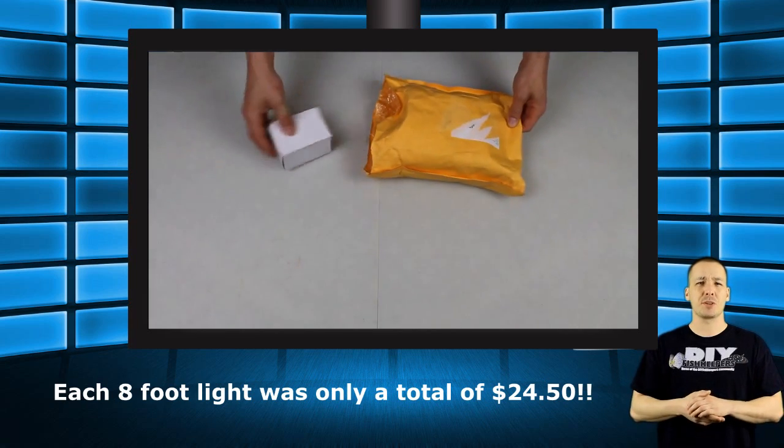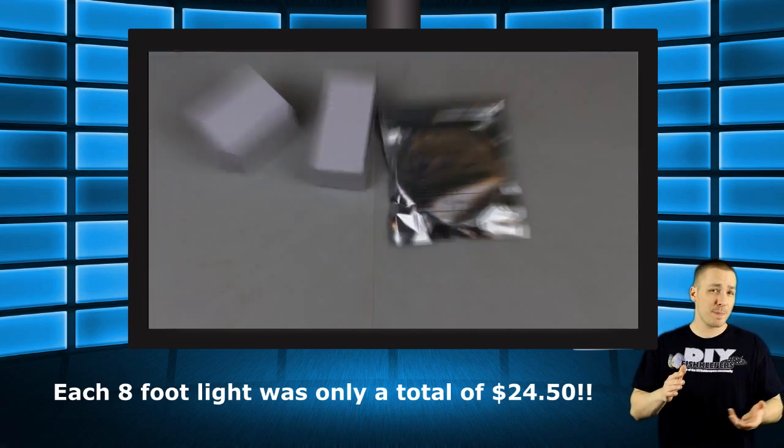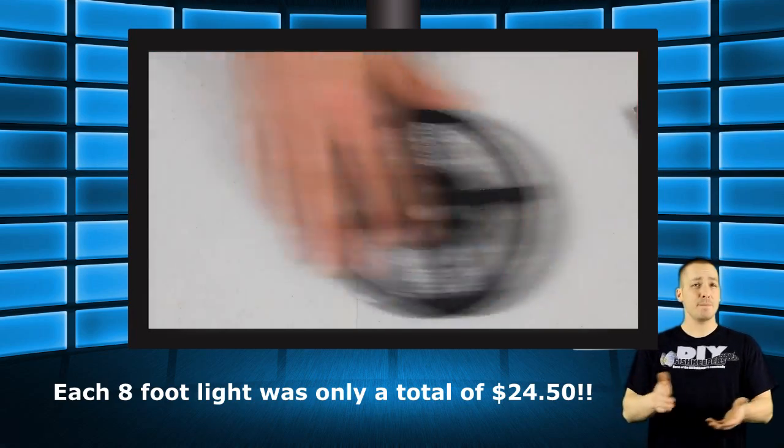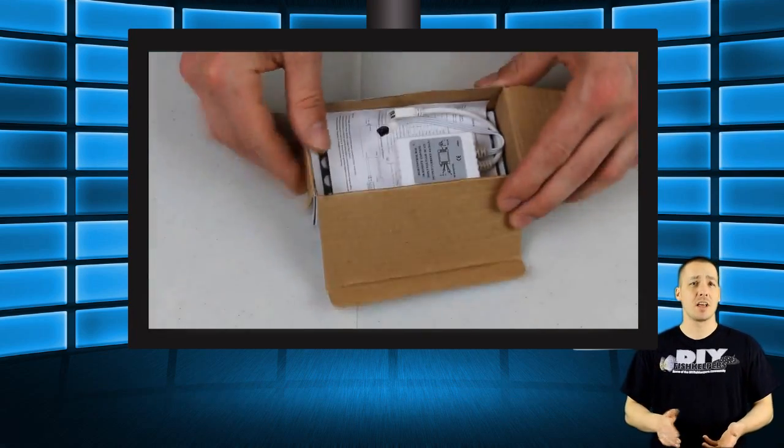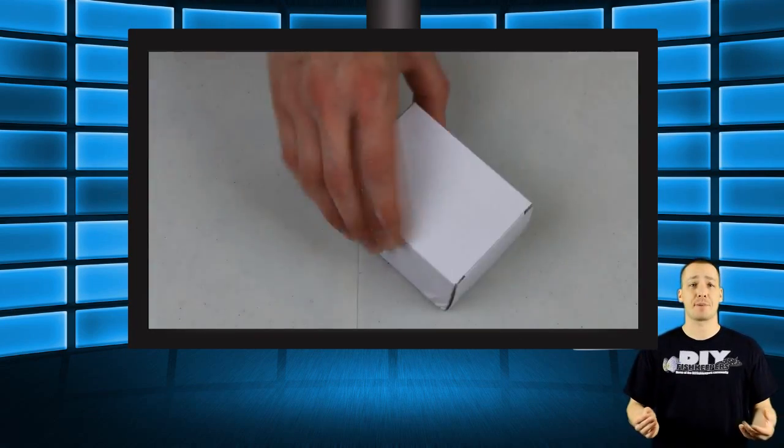So let's get started with the build. Your package of LED equipment will contain three packages. The first package will contain your roll of waterproof LEDs. The second package will contain your control box, the remote control and the instructions. The last package will contain the power adapter.